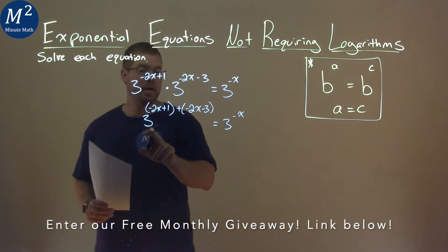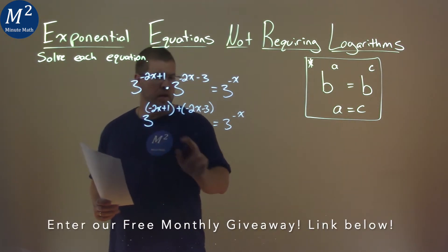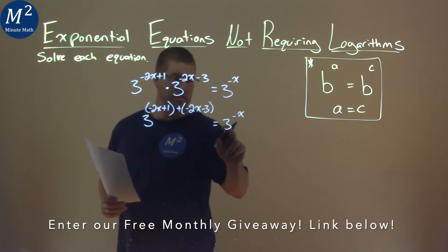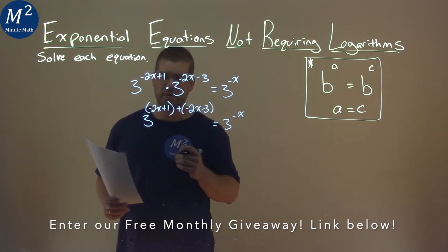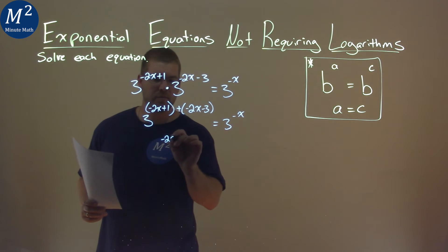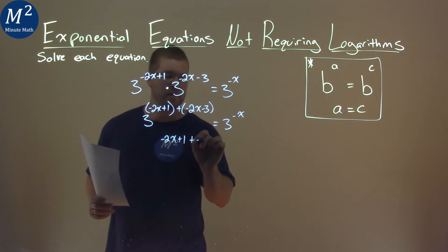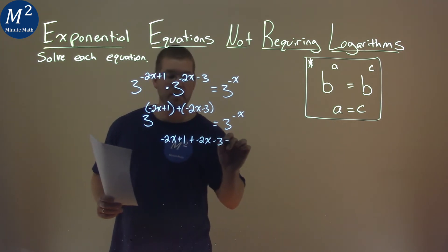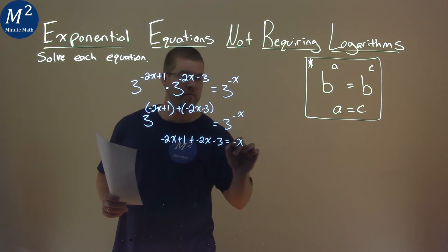Now, we have the same base to a crazy exponent here, but it's equal to the same base of 3, to a negative x power for the exponent. When we have that with the same base, we can just set the exponents equal to each other. So, negative 2x plus 1 plus a negative 2x minus 3 is now equal to a negative x.